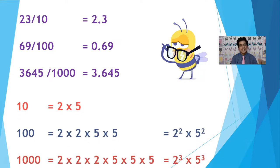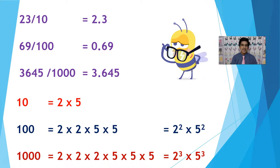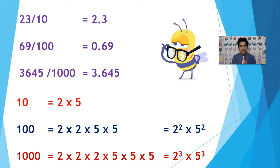Let us take the prime factorization of 10, 100, and 1000. 10 is 2 into 5. 100 is 10 into 10, which is 2 into 2 into 5 into 5, that is 2 squared into 5 squared. 1000 is 2 into 2 into 2 into 5 into 5 into 5, which is 2 power 3 into 5 power 3. So 10 has prime factorization 2 power 1 into 5 power 1, 100 is 2 squared into 5 squared, and 1000 is 2 power 3 into 5 power 3.